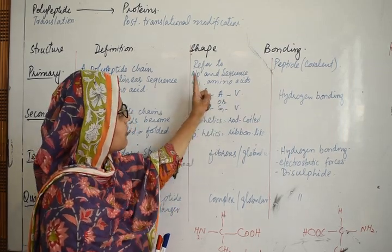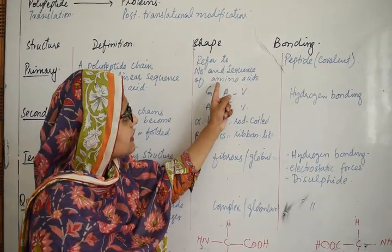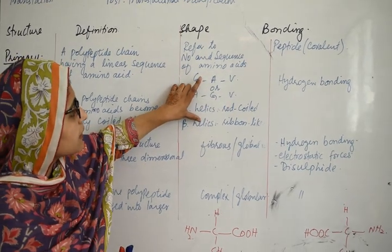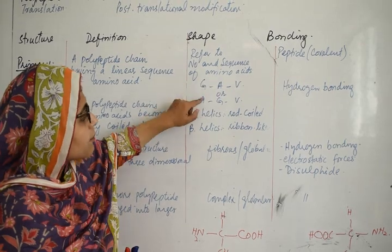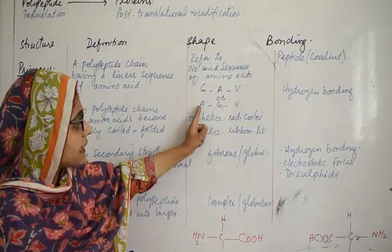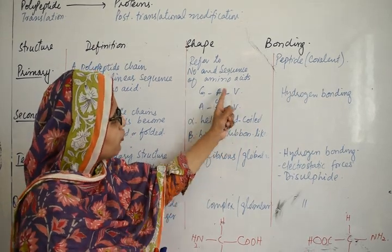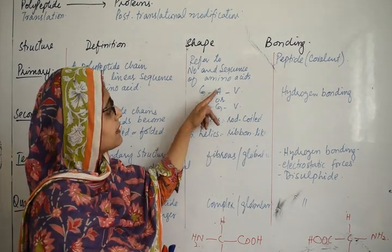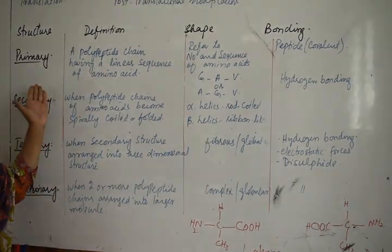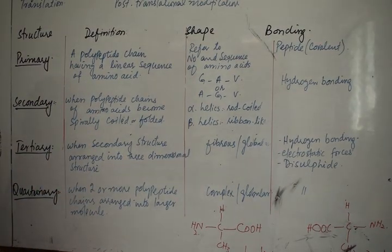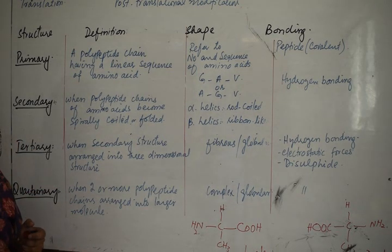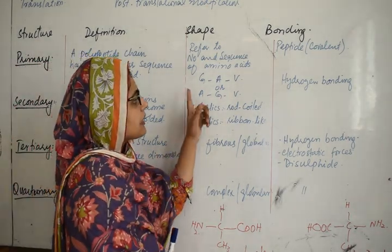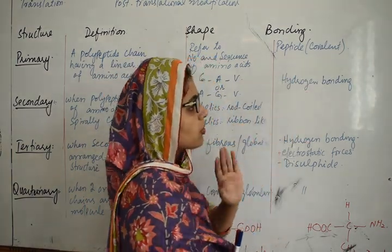In the primary structure, the sequence of amino acids is important. For example, if the first protein has glycine, alanine, and valine, but a second protein has the same composition of amino acids with a different sequence, the number of amino acids is the same but their sequence is different. This structure tells us about the number and sequence of amino acids. From this, we can determine whether we have normal functional or abnormal dysfunctional proteins. The bond linking amino acids is a peptide bond, which is a covalent bond.